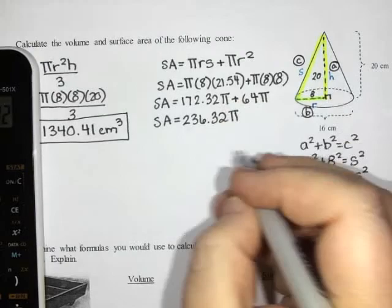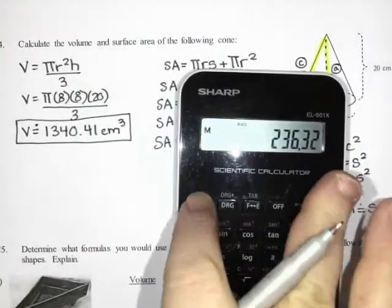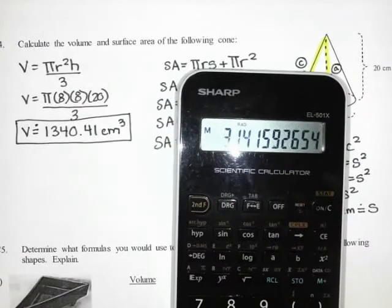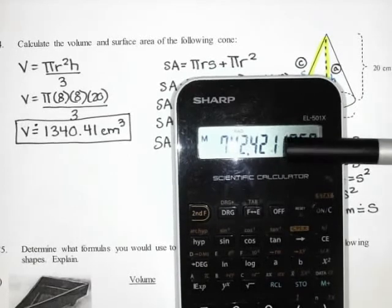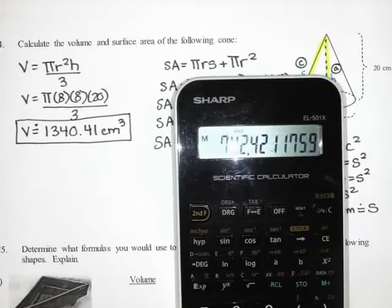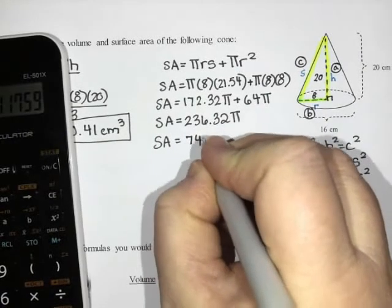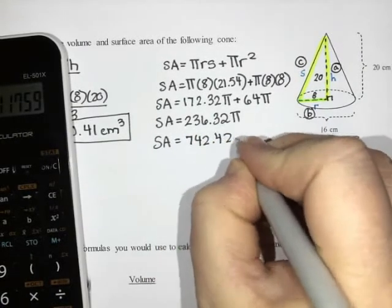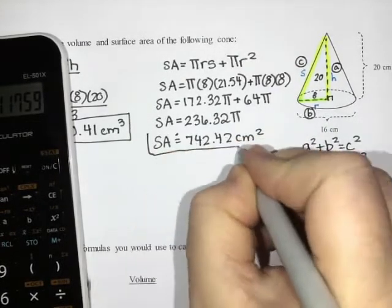172.32 plus 64 is 236.32 pi. Now that I'm down to my final answer, I can actually multiply it by pi. I get 742.42 centimeters squared. I rounded that, so I'm going to put that dot over the equal sign.